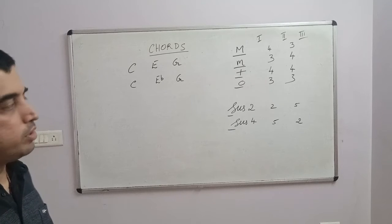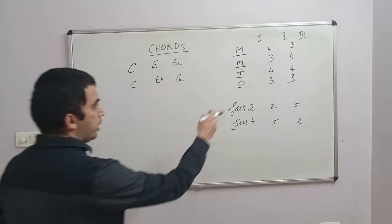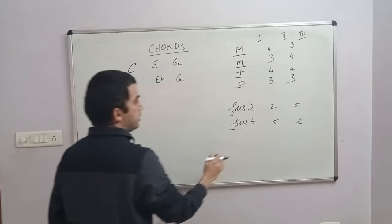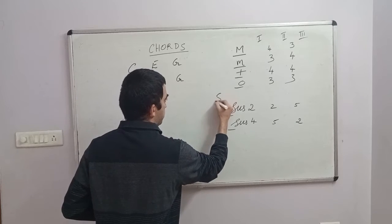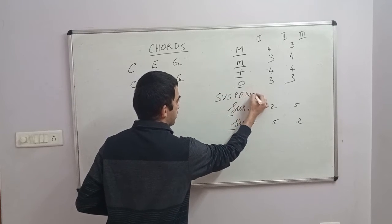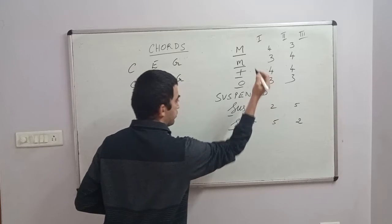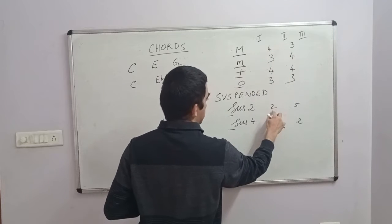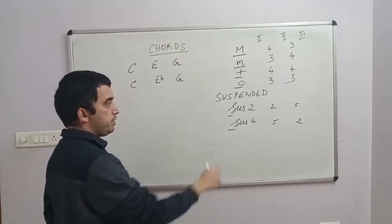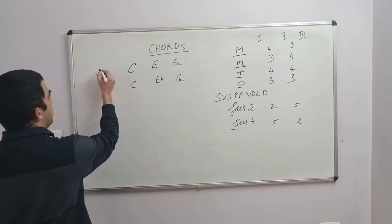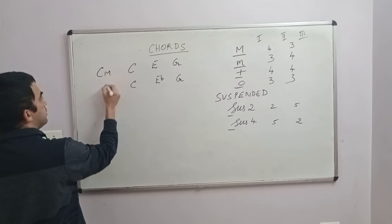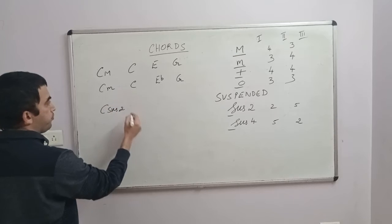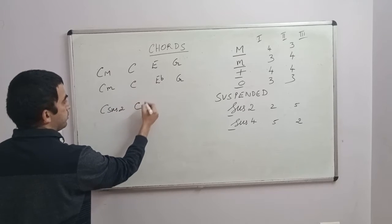We'll skip the augmented and the diminished for now just so that we understand what the sus2 chord is. Just like we had four and three semitones and three and four semitones, in a sus2 chord, 'sus' is nothing but suspended. Here the distance between the first and the second note is only two semitones in sus2. So if this is C major, this is C minor, you say C sus2. So the notes of the chord will be C, D...